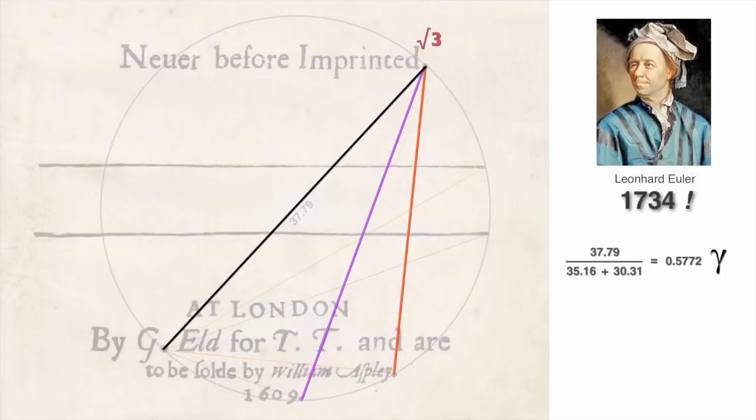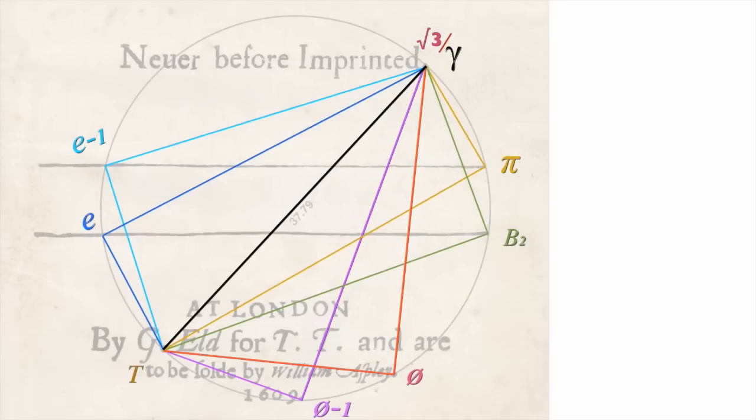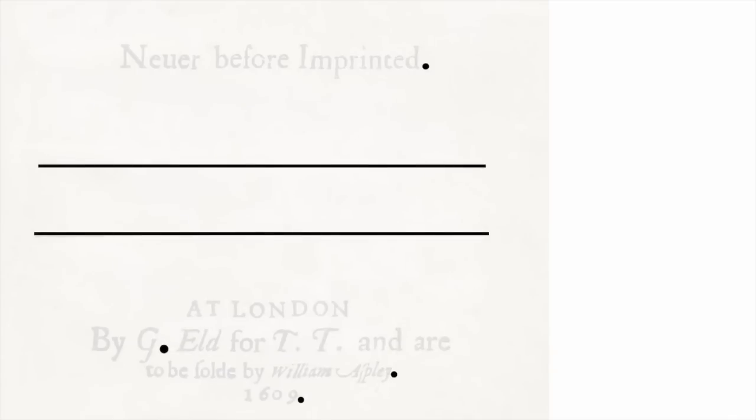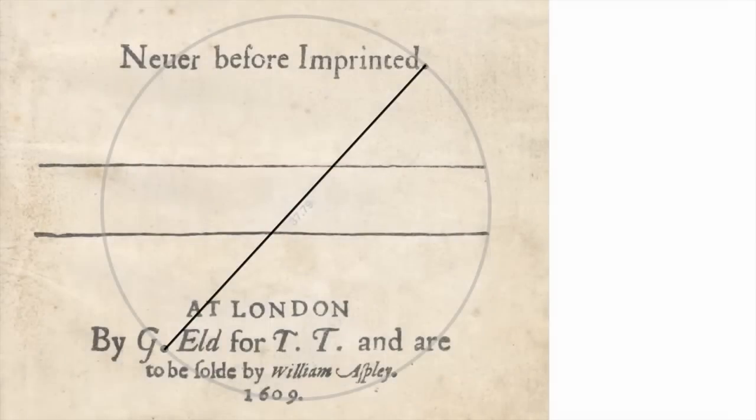I want you to think deeply about what you're looking at here. Altogether, nine of the world's most important math constants, five of which were completely unknown in 1609 when the sonnets were published. All this encrypted within just four dots and two lines. And this is only what's inscribed within the hidden circle.